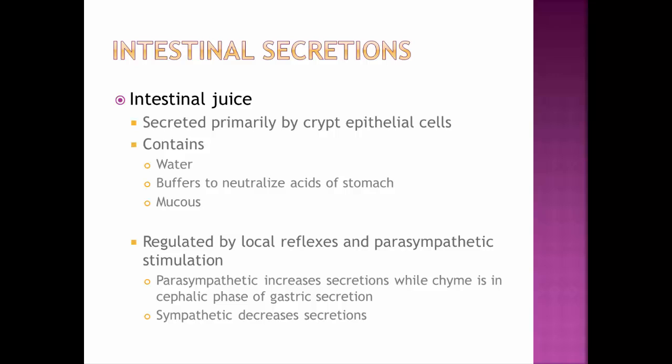Intestinal secretions include intestinal juice — fluid secreted primarily by cells in the crypt, not the villus, since the villus is mostly absorptive cells. Intestinal juice contains water, buffers to neutralize stomach acid, and mucus. Notably, the intestinal juice is enzyme-poor; the only enzymes the intestine itself makes are the brush border enzymes embedded in the cell membrane. Most digestive enzymes used in the intestine come from the pancreas, entering the small intestine to perform digestion.